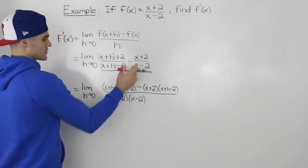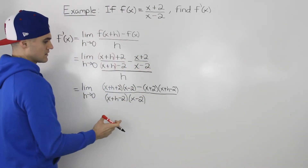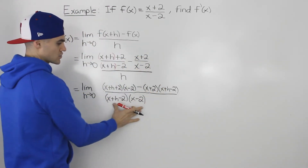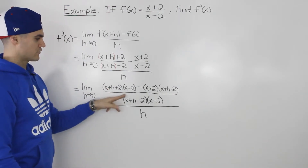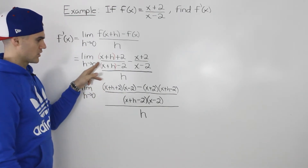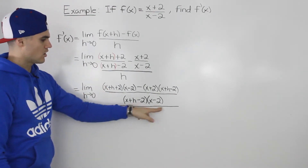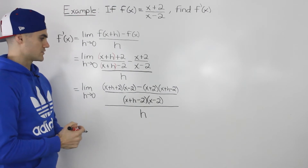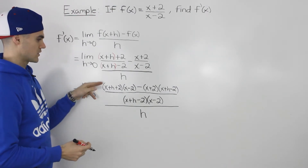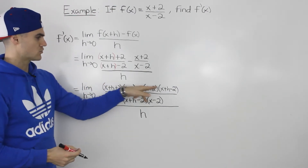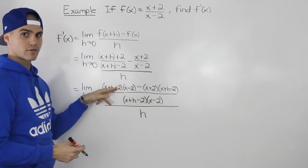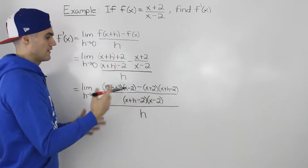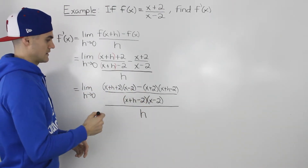So these two fractions subtracted equals this big fraction, with (x+h+2)(x-2) minus (x+2)(x+h-2) in the numerator and (x+h-2)(x-2) as the denominator. This big fraction in the numerator is still all over h. Now we need to expand the numerator and simplify it.